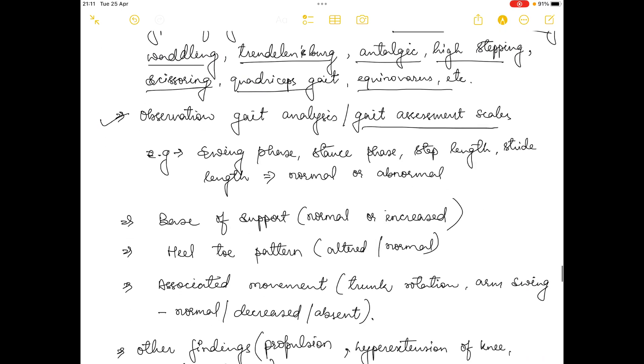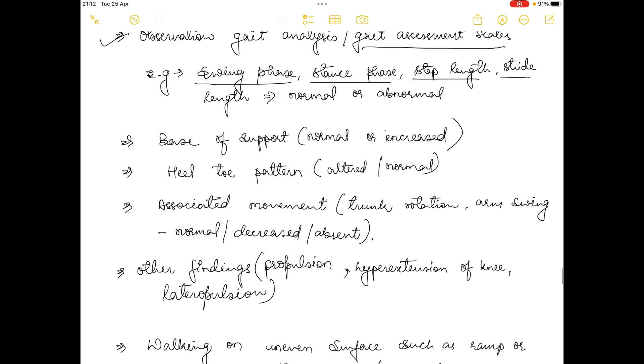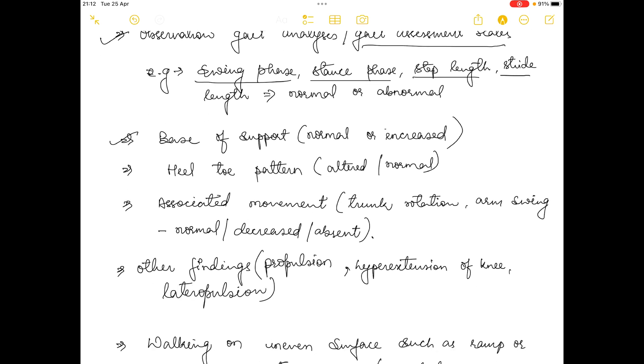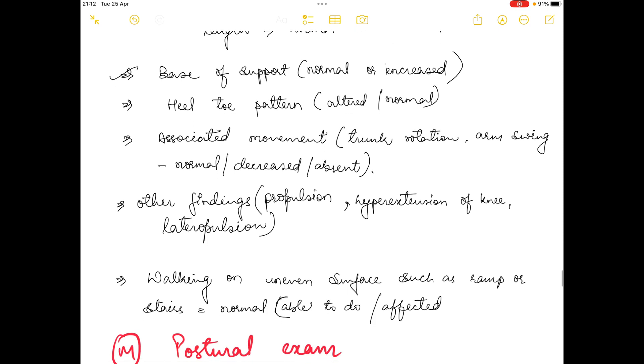The next thing is observational gait analysis or gait assessment scales. There are many things you could assess such as the swing phase is normal or not, stance phase is normal or not, step length, stride length - are these normal or abnormal. Next thing is base of support, which can also be assessed - is it normal or increased? Similarly with heel-toe pattern - is it altered or normal? Associated movements: whenever a person walks, there are some kinds of associated movements along with walking patterns such as trunk rotation, arm swing. Is the associated movement normal, decreased, or totally absent?